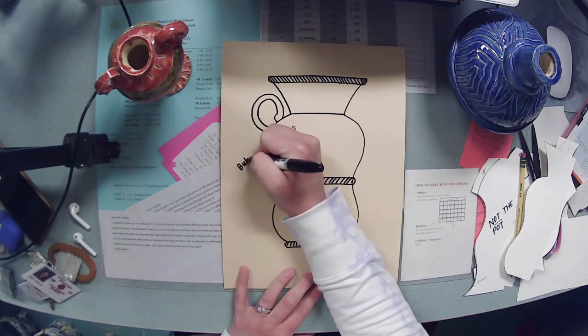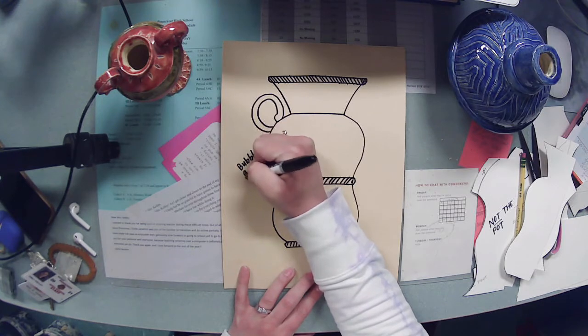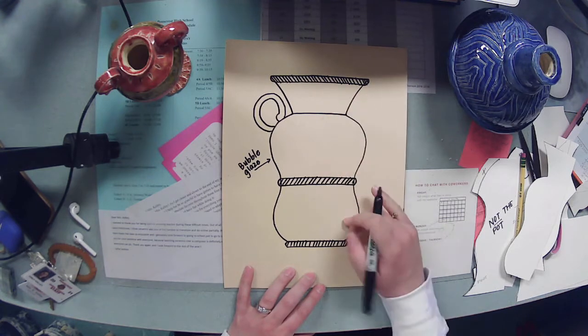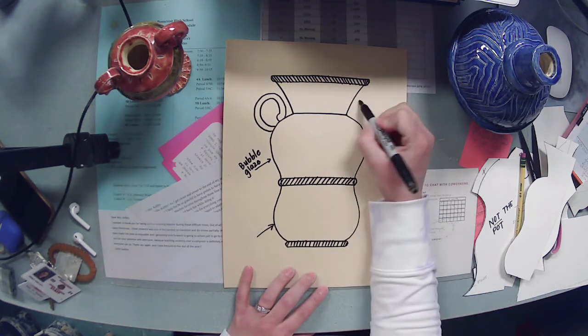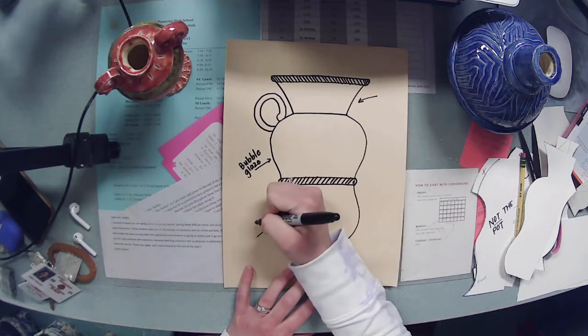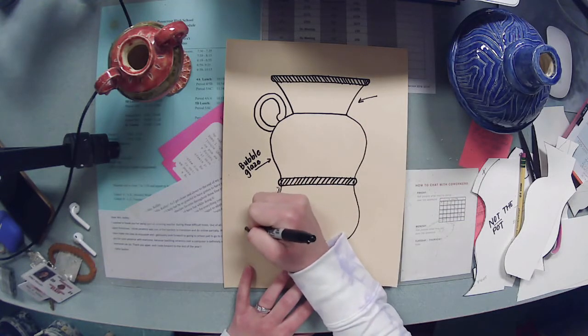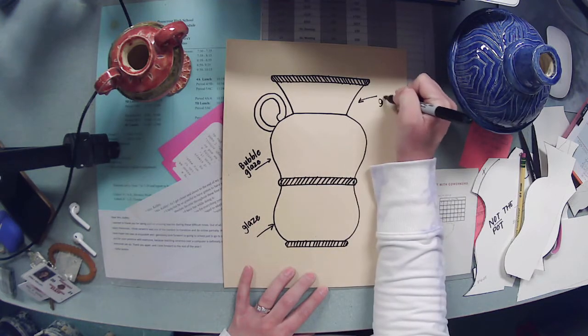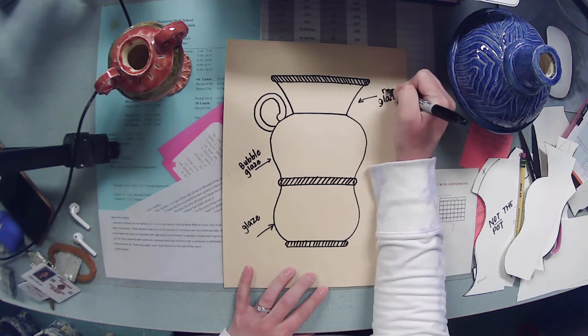So then I can put my let's say bubble glazing here and then I want to have an opportunity to do regular glaze in other areas. So you don't have to do the non-traditional glaze everywhere you can add areas of regular glaze.